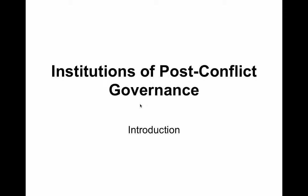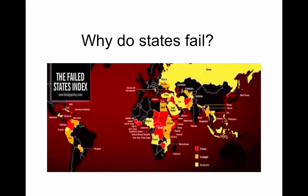Welcome to the Institutions of Post-Conflict Governance. This is our first mini lecture, which will focus on why states fail and what we can do about it. There are many factors that contribute to state failure, some of them are political systems crisis, ineffective power sharing, insurgencies, bad economic policies, corruption, unresolved past grievances, and ineffective ways of dealing with the past.